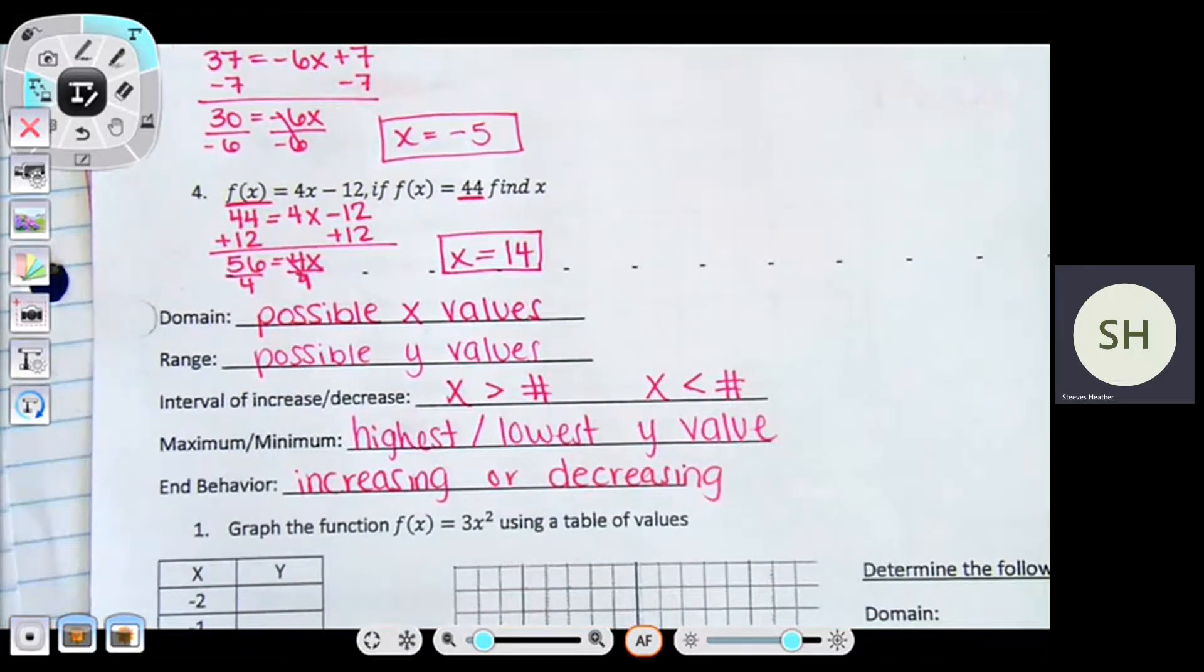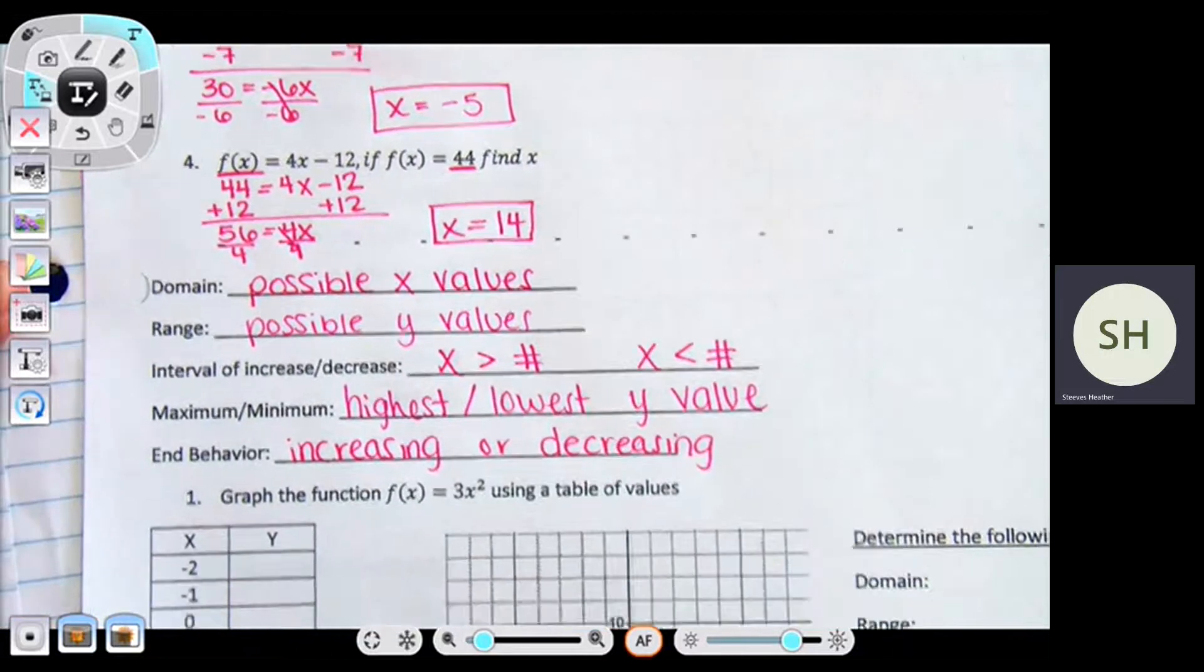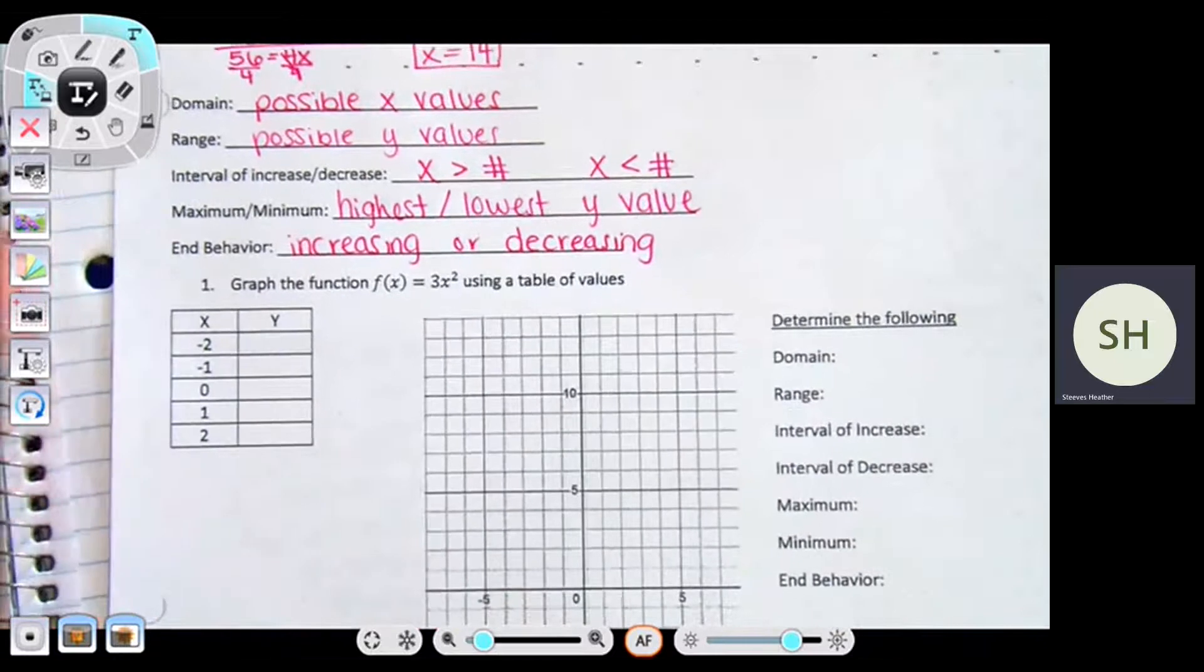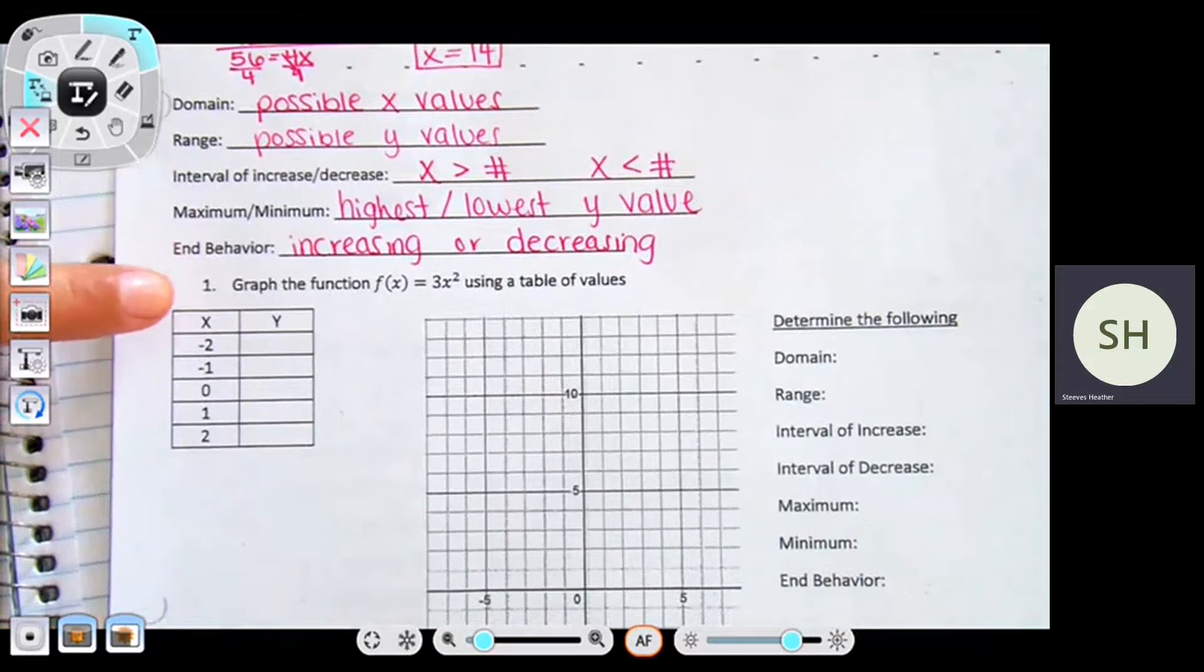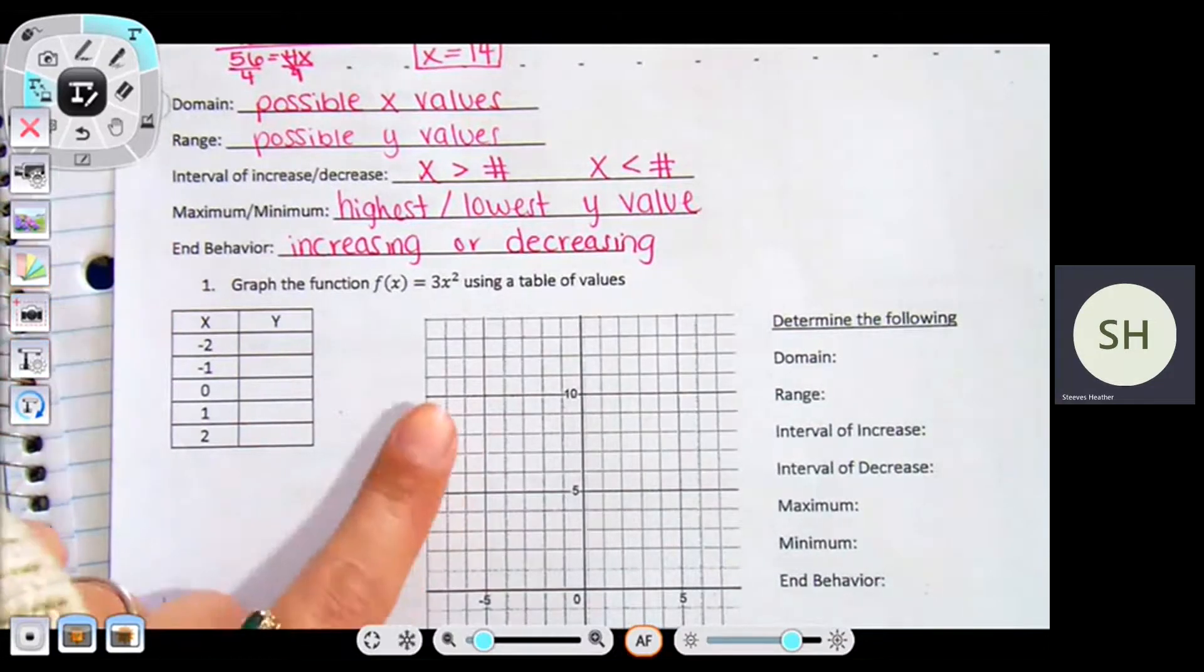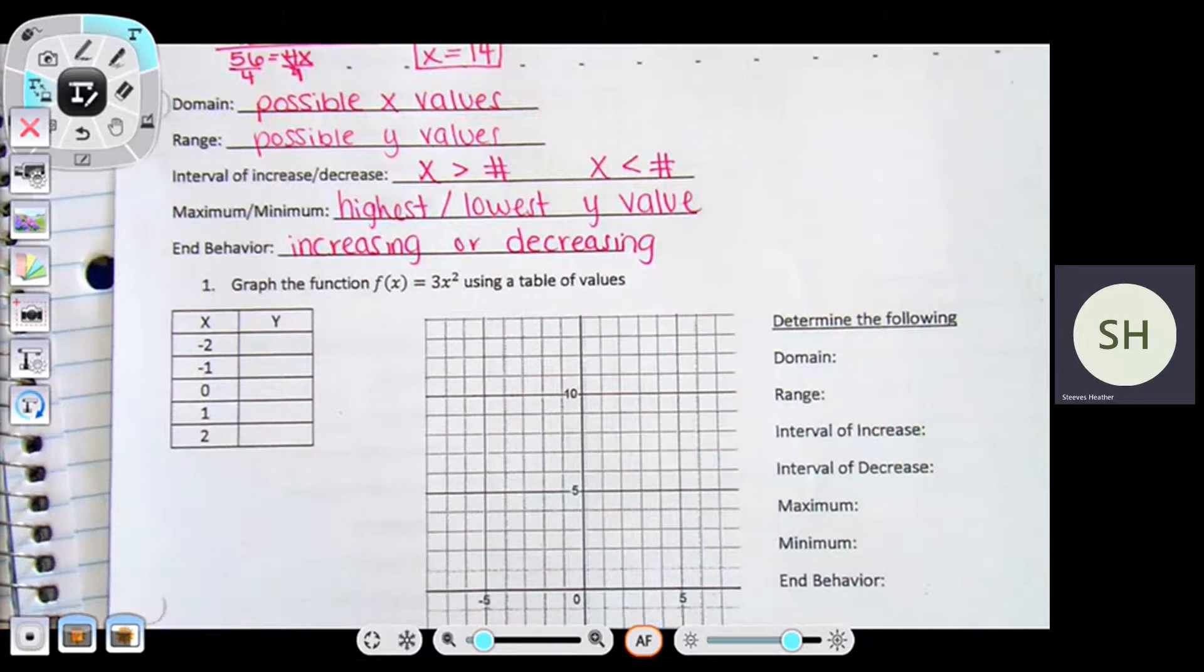Where is it turning from decreasing to increasing or increasing to decreasing? Which once we get into an example, it'll make sense. A maximum and a minimum is just the highest or lowest y value on the graph. And end behavior means overall is this graph increasing or decreasing over time. So you would just state increasing or decreasing. A graph can have both increasing and decreasing parts, but overall from left to right, like is it increasing or decreasing from left to right?